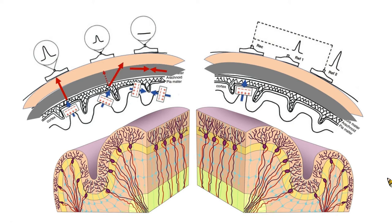If we place the electrode at the offset of two electrode fields, we may record a flat line on the EEG. When we compare the two electrode potentials, the different reference we choose will affect the EEG appearance.